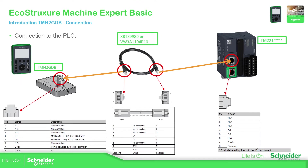What I want to focus on now is the connection between the M221 and the remote display. The communication between these two is via Modbus, so we need a Modbus cable. We only use four wires inside this cable — for Modbus lines 4 and 5, the common, and the 5 volts that come from the PLC to the display. The only connector on the display is an RJ45, and the PLC energizes the remote display through it.